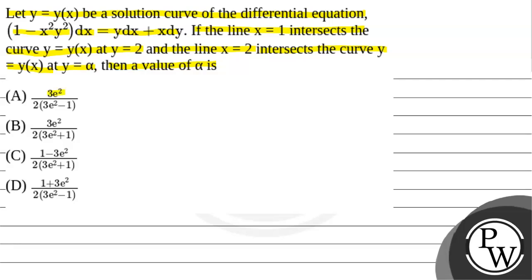Option A: 3e² / (2(3e² - 1)). Option B: 3e² / (2(3e² + 1)). Option C: (1 - 3e²) / (2(3e² + 1)). Option D: (1 + 3e²) / (2(3e² - 1)).